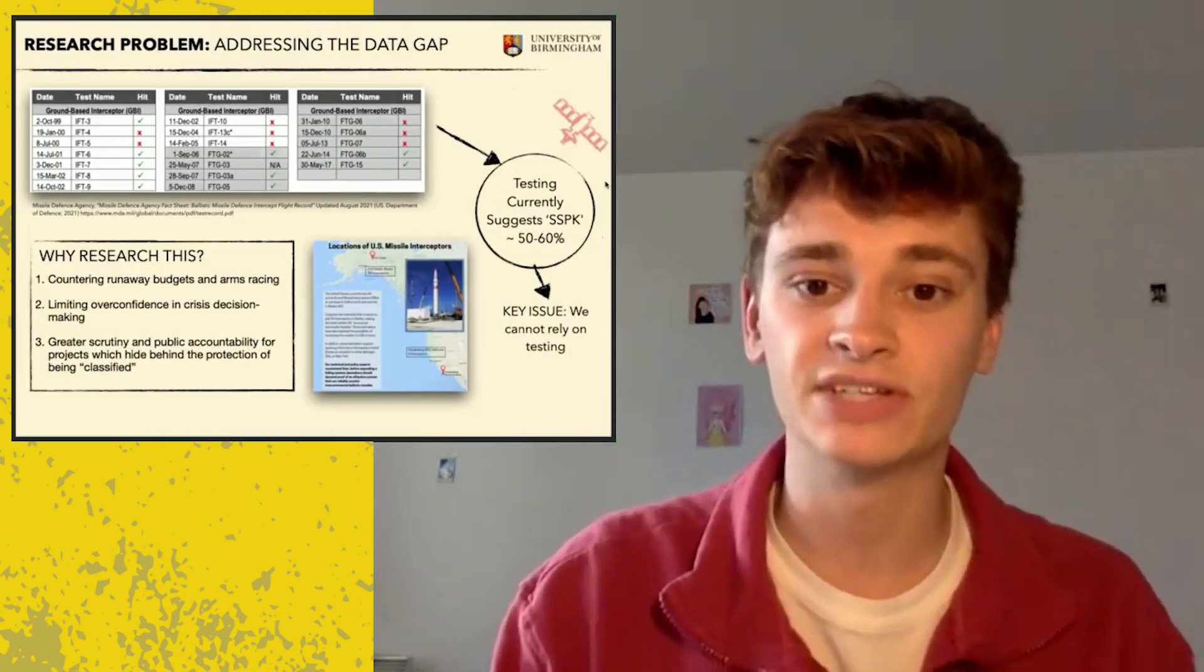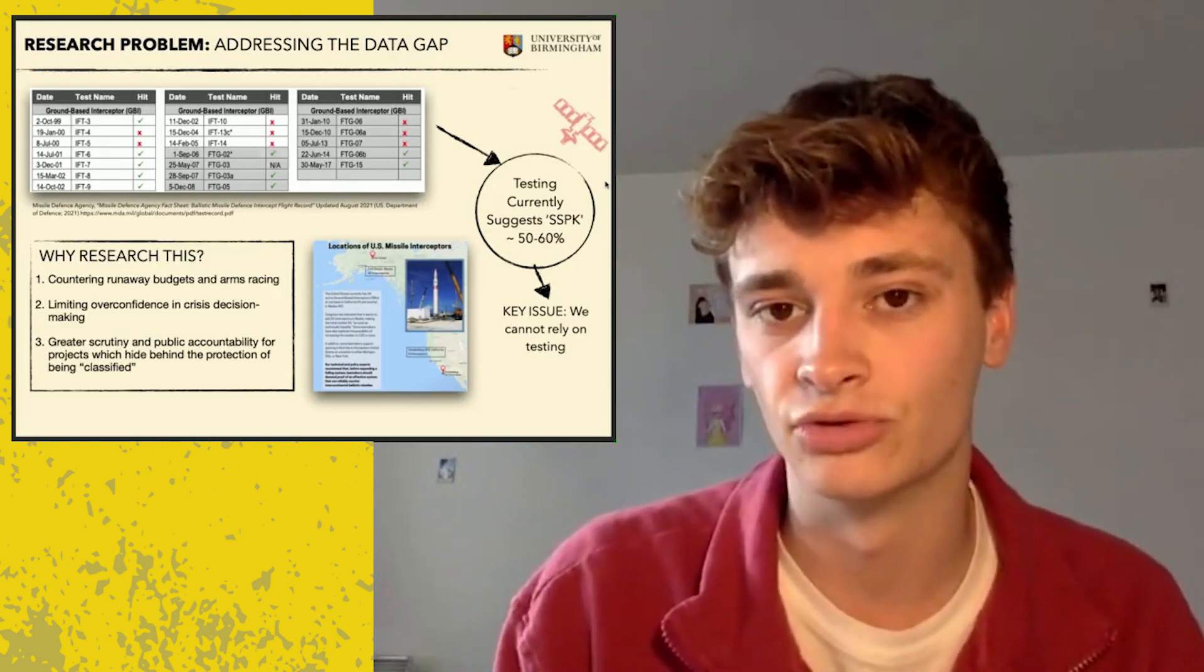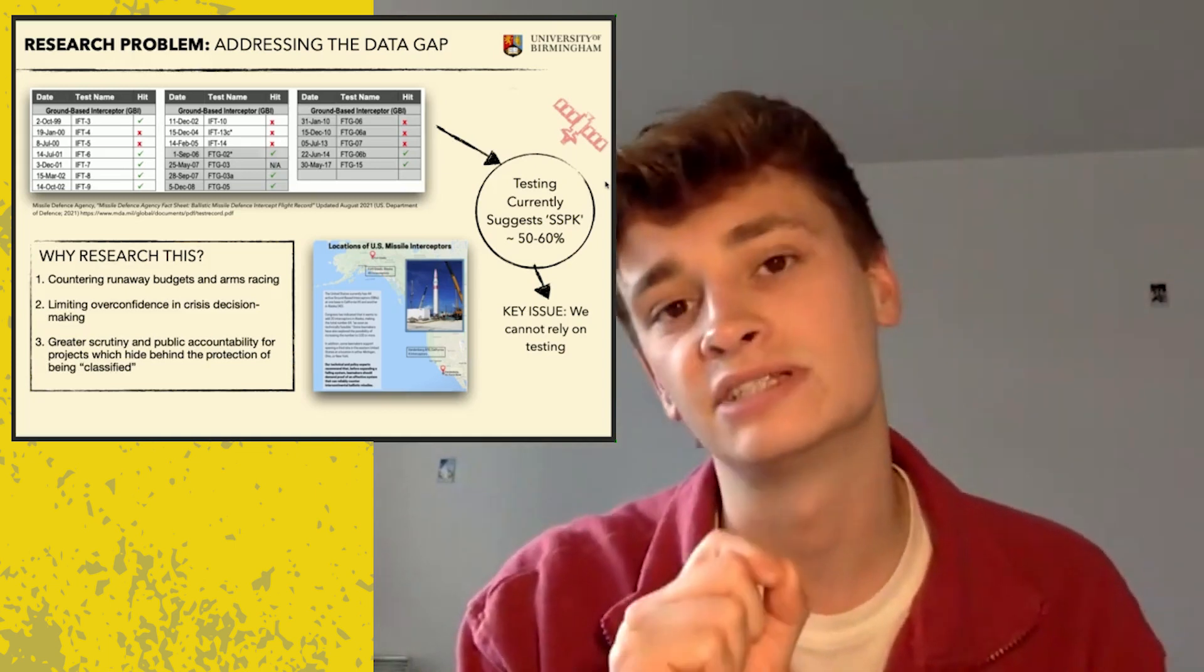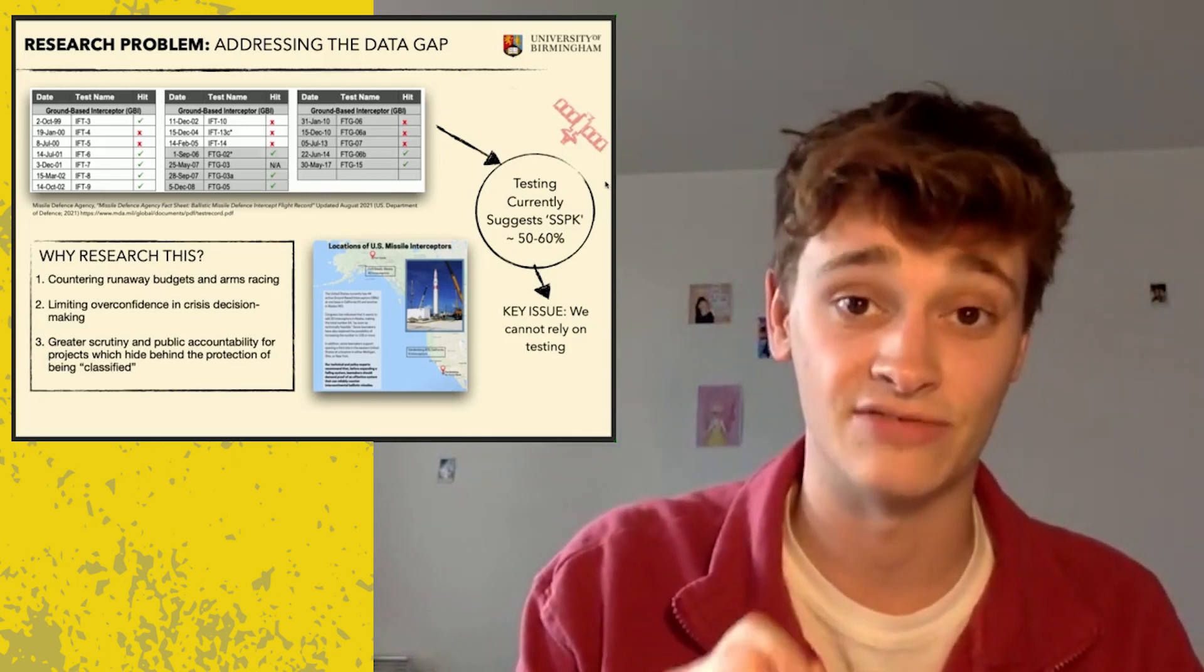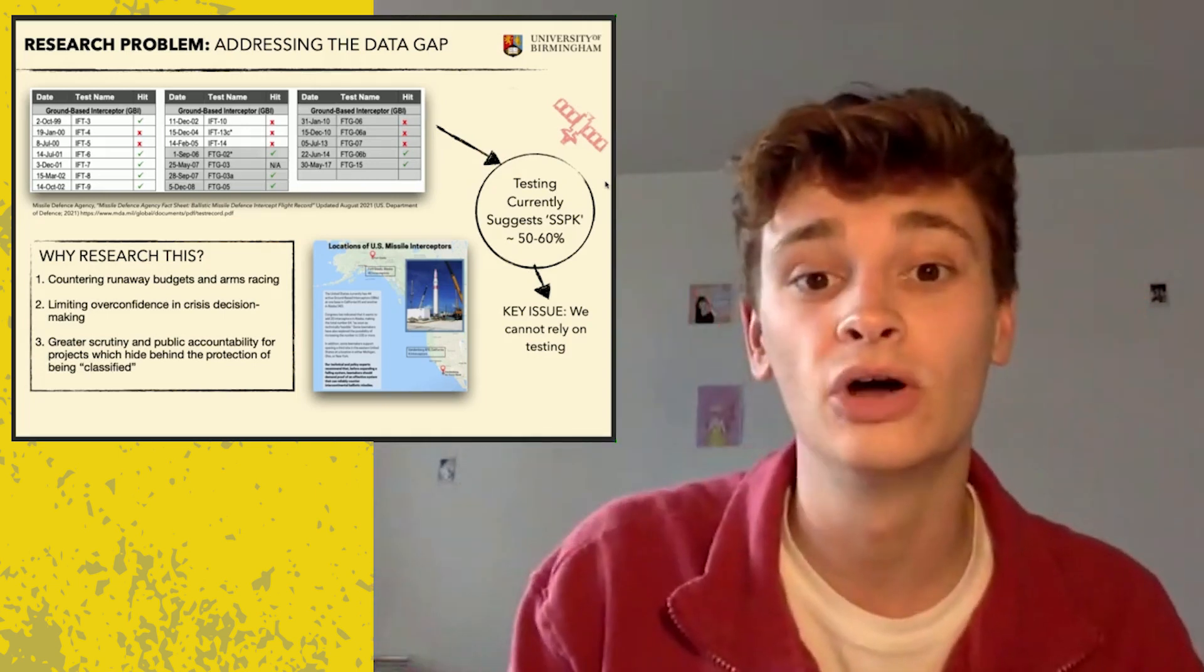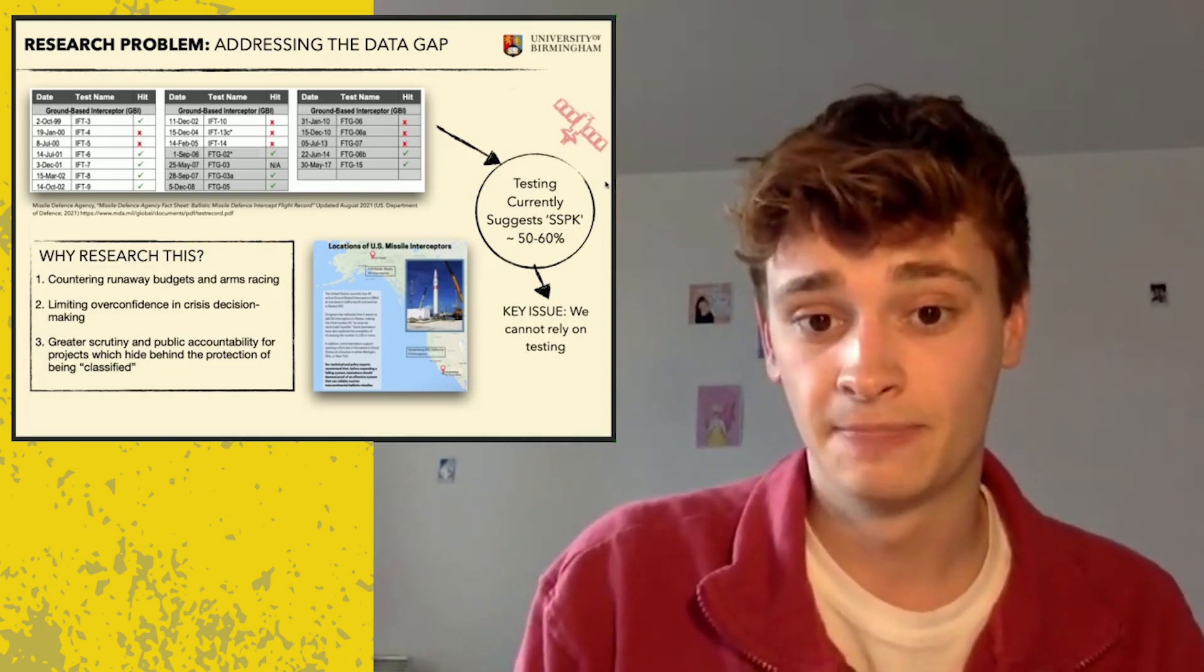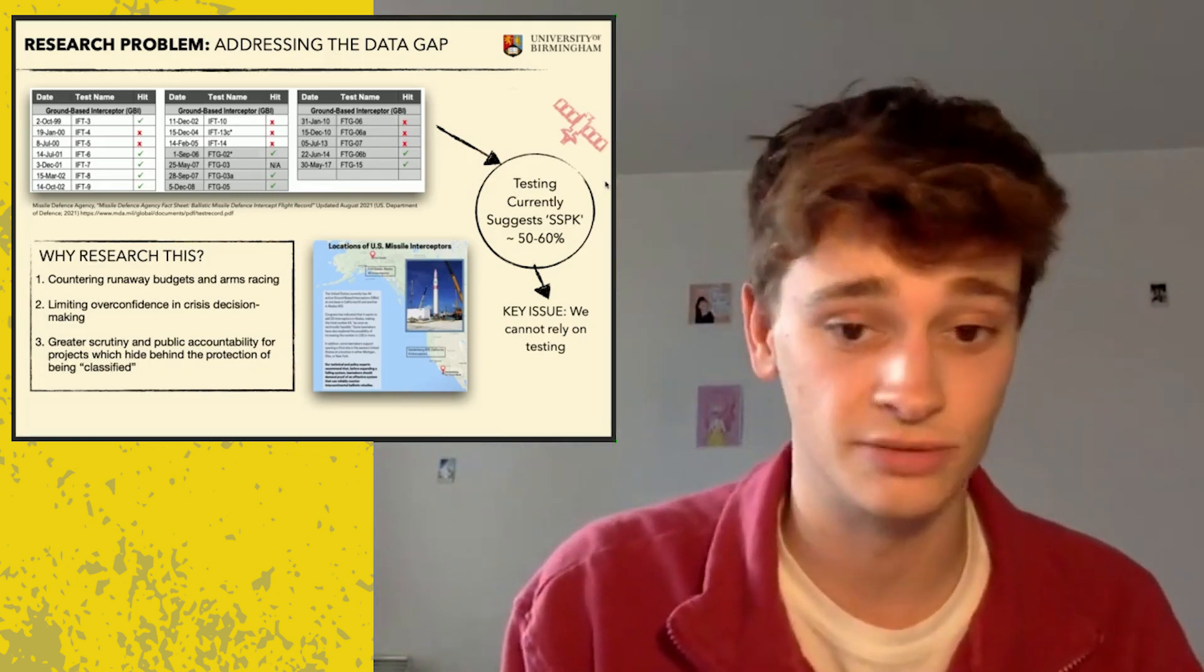I'm calling it the data gap. And this is a problem for analysts, and it's simply that we are not provided with the right data to be able to scrutinize this system and its policy implications. What we do know is that GBMD has been tested 19 times for interception. Of those 19 times, it has only succeeded in 11 tests. That leaves an SSPK, or a single-shot probability of kill, of about 57%. That is terrible for a system required to do the job it's asked of. And the key risk here is that overconfidence in GBMD could lead to reckless decision-making.